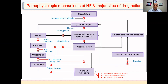Also, to stop the sodium and water retention, we can use diuretics like spironolactone, eplerenone, and others. When we use these drugs, they can decrease cardiac remodeling, which is represented by progressive chamber dilation, loss of contractile function, and ventricular hypertrophy.